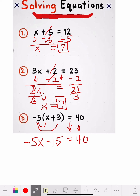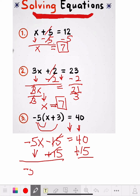Now we still have to get x by itself. I get rid of the negative 15 first. What's the opposite of negative 15? A positive 15. So we add positive 15 to both sides. Positive 15 and negative 15 cancel each other out and are gone. The negative 5x carries down. Now on the right side, 40 plus 15 equals 55 — wait, that's 60. So we have negative 5x equals 60.